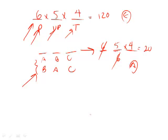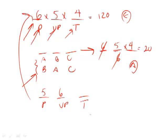Problem three: a committee composed of a president, vice president, and treasurer — looks familiar. But here five different people are running for president, six different people for VP, and three different people for treasurer. Unlike the first problem where the same group of six was eligible for all spots, here each position has its own separate pool. The math is the same — put the numbers in the dashes and multiply: 5 × 6 × 3 = 90, which is answer choice D.